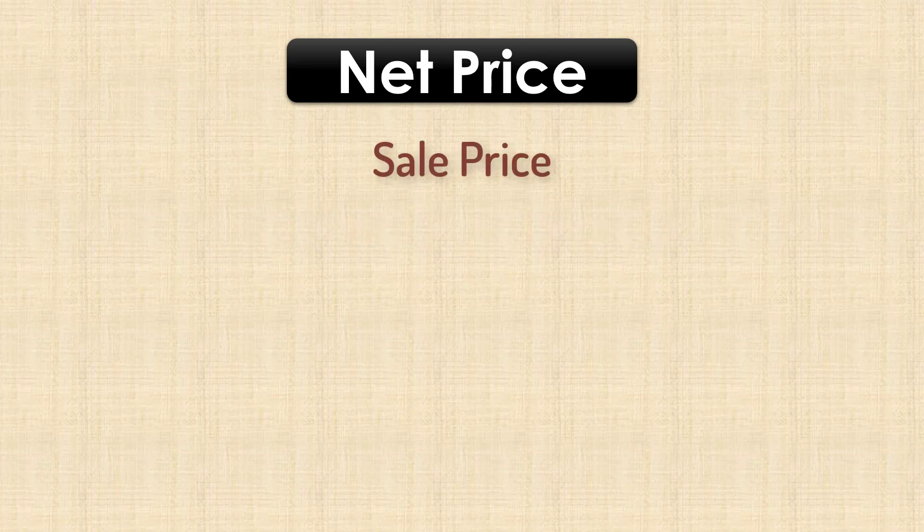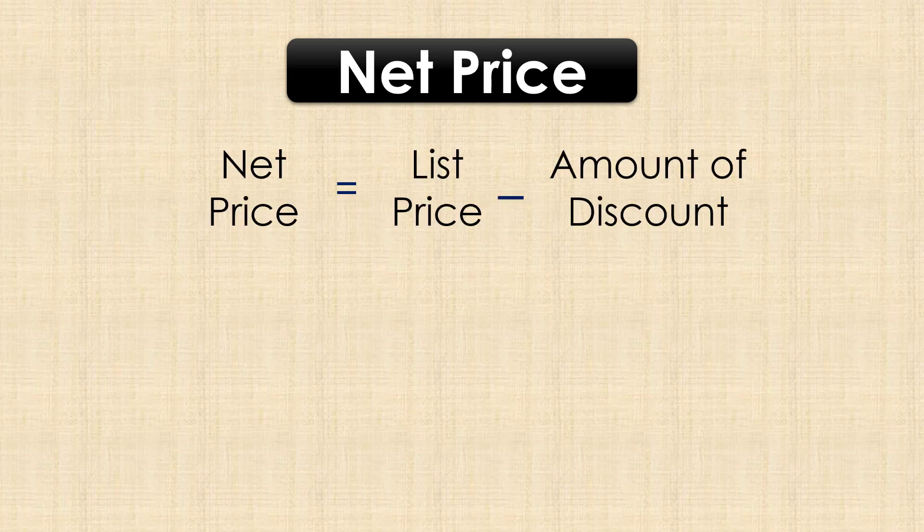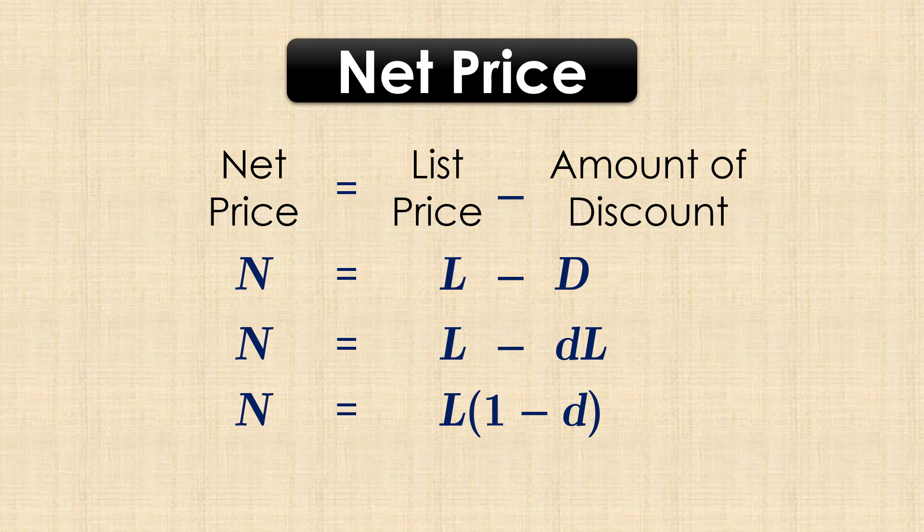The net price is the actual amount paid after the discount has been applied. That is, the sale price. So the net price is the list price minus the amount of discount, or N equals L minus uppercase D. Since the amount of discount is the rate of discount times the list price, the net price can also be represented as L times 1 minus D.